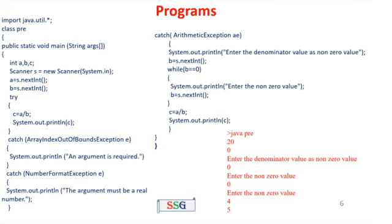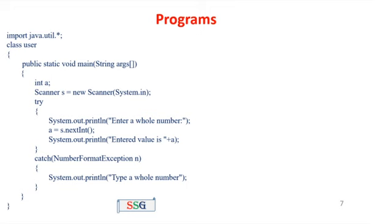So the user can write any statements in the catch block. If you want to execute the program with a specific logic, you have to write the code for that logic in the catch block — no problem. Next program: we import java.util.* and declare class User with public static void main and int a with a Scanner.